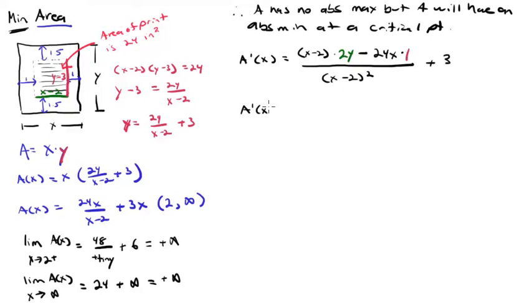If I clean this up a little bit, I can distribute the 24. I get 24x minus 48 minus 24x all over (x-2) squared plus 3. Good things happen. It turns out the 24x's are going to sum to 0. And now I have my derivative, negative 48 over (x-2) squared plus 3.